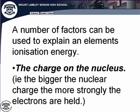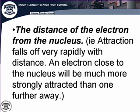First of all, the charge on the nucleus is really quite important, because to remove an electron you're overcoming the electrostatic attraction between the electron, which is negatively charged, and the nucleus, which is positively charged. The bigger the nuclear charge, the more strongly an electron will be held. Another factor is the distance the electron is from the nucleus — the higher the principal energy level, the further away an electron is, and that attraction falls off very rapidly with distance.